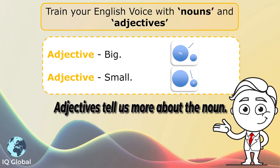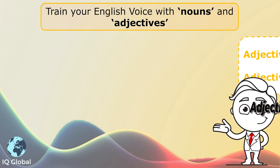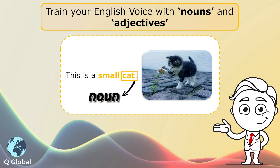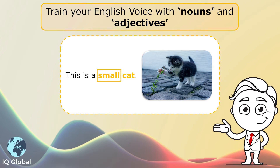Let's have a look at some examples. This is a small cat. The word cat is the noun because it names something — it names the animal. The word small describes that cat; you are telling us more about the noun. The cat is small, so the word small is the adjective.